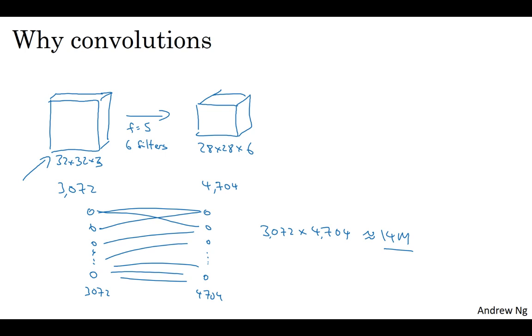And of course, if this were to be a thousand by thousand image, then this weight matrix would just become infeasibly large. But if you look at the number of parameters in this convolutional layer, each filter is 5 by 5. So, each filter has 25 parameters,